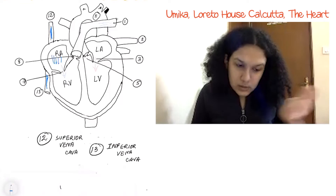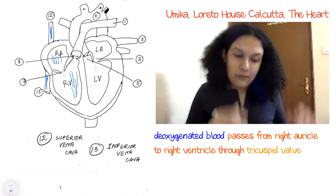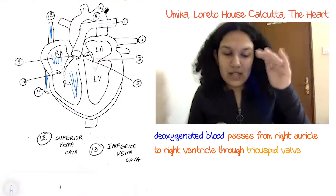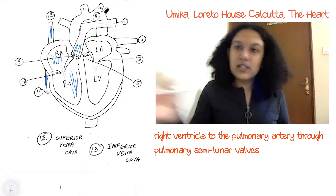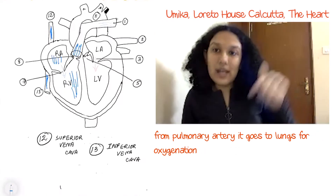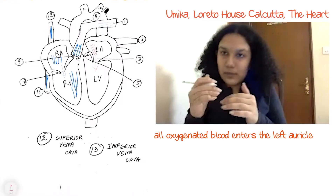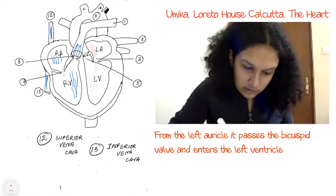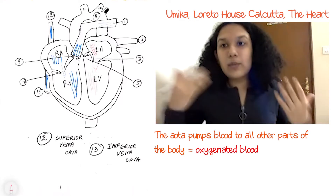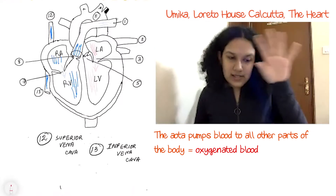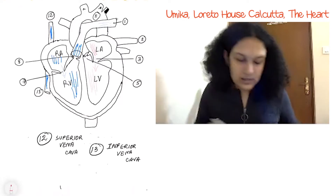The deoxygenated blood collected in the right auricle passes to the right ventricle through the tricuspid valve. From the right ventricle it flows into the pulmonary artery through the pulmonary semilunar valves, and from the pulmonary artery it goes to the lungs for oxygenation. From the lungs, oxygenated blood enters the left auricle, passes through the bicuspid valve into the left ventricle, and from the left ventricle it goes to the aorta, which pumps oxygenated blood to all other parts of the body.